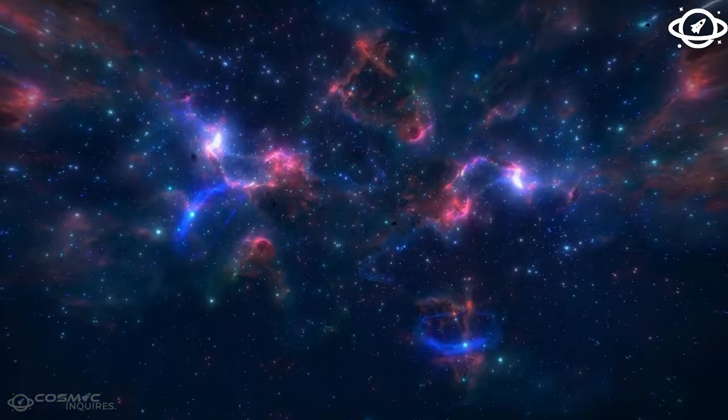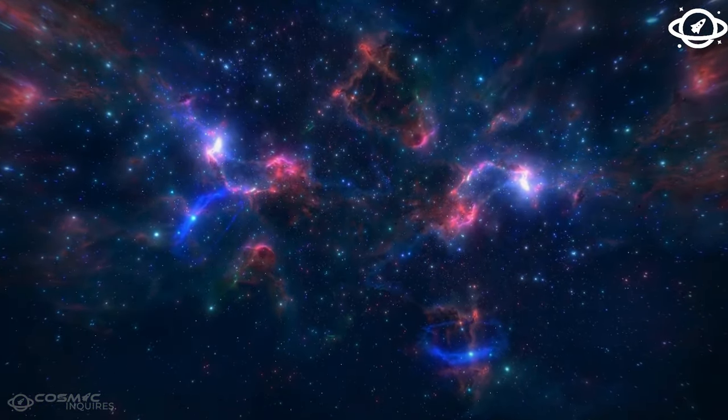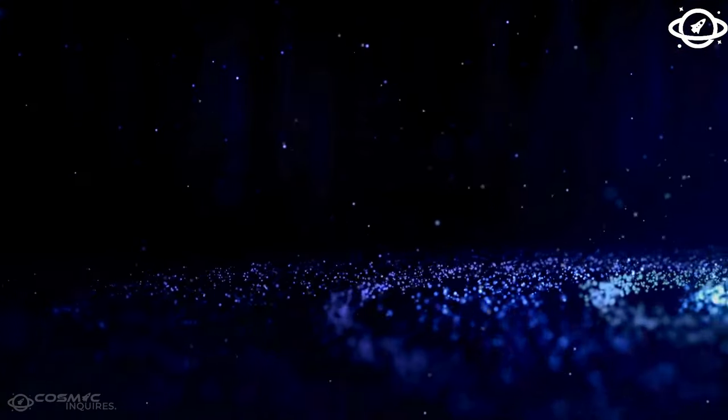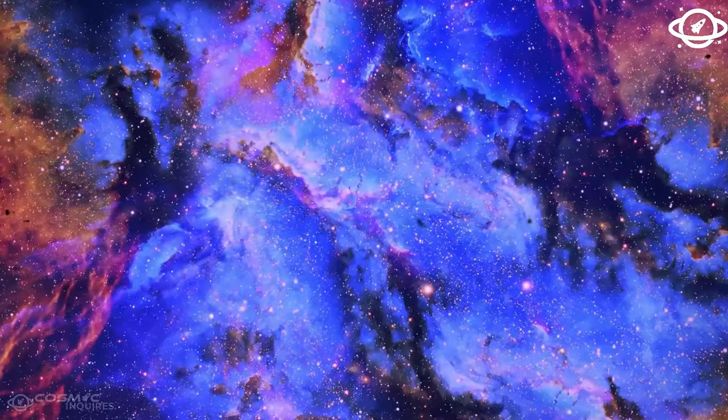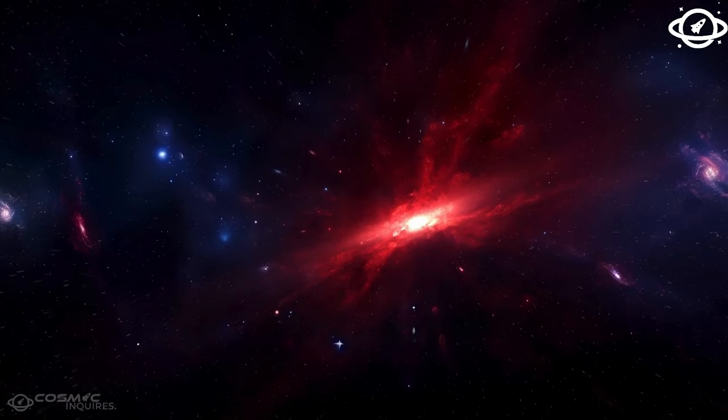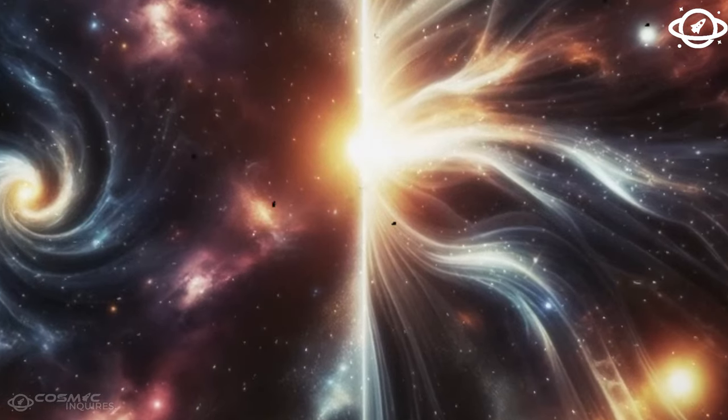This class of black holes could serve as a precursor to supermassive black holes, and in the case of IRS-13, the densest and largest structure near Sagittarius A*, a 30,000 solar mass intermediate black hole may be present, holding the star cluster together.